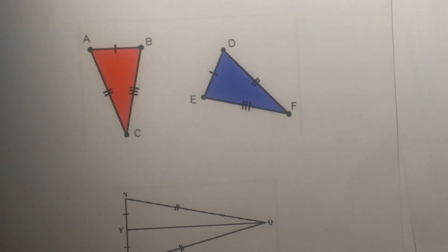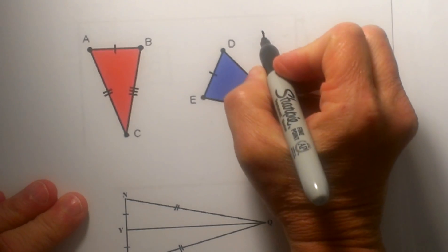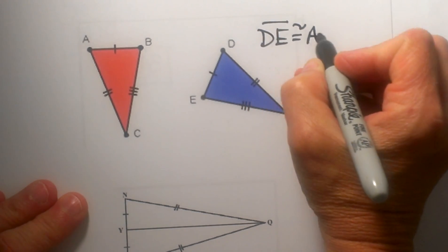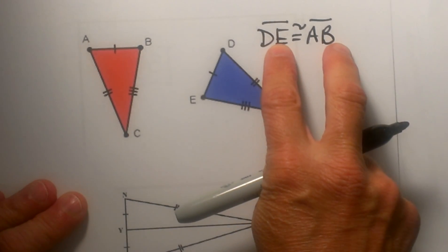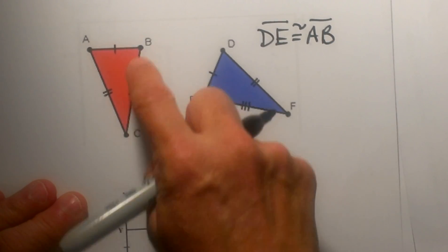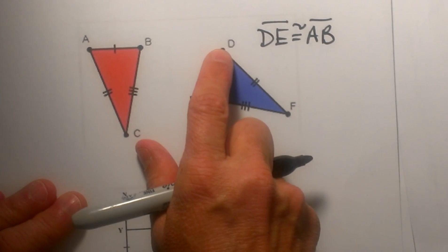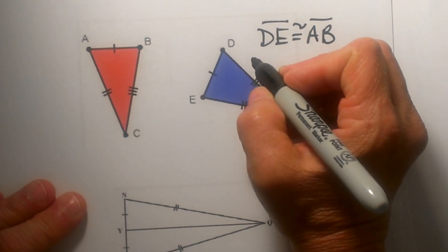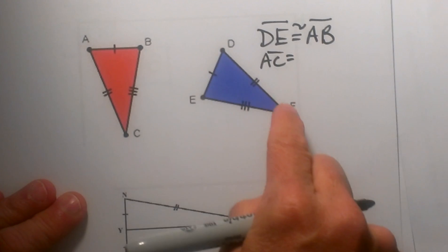Here is this first one. We have side AB and it is marked congruent to side DE, so we can list DE is congruent to AB. So there is one side that is congruent to each other. Then we have these sides that are marked: from A to C has two marks on it and from D to F has two marks on it. So I am going to list that as AC is congruent to DF.